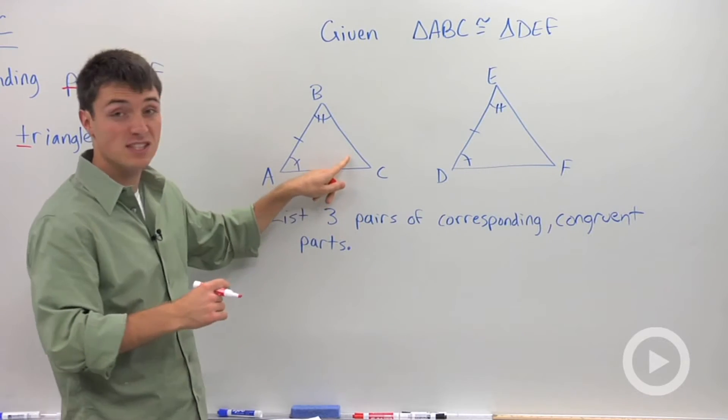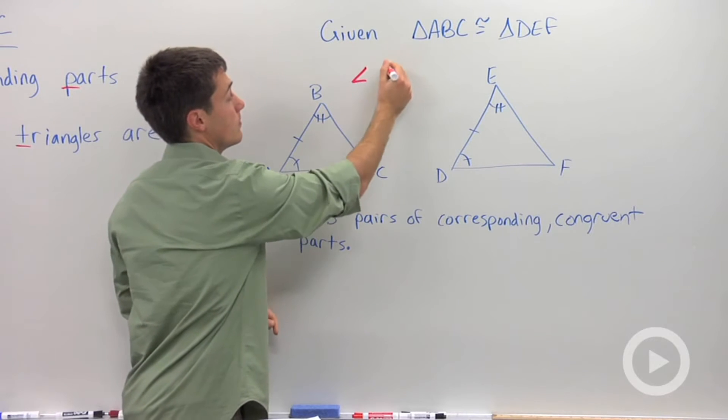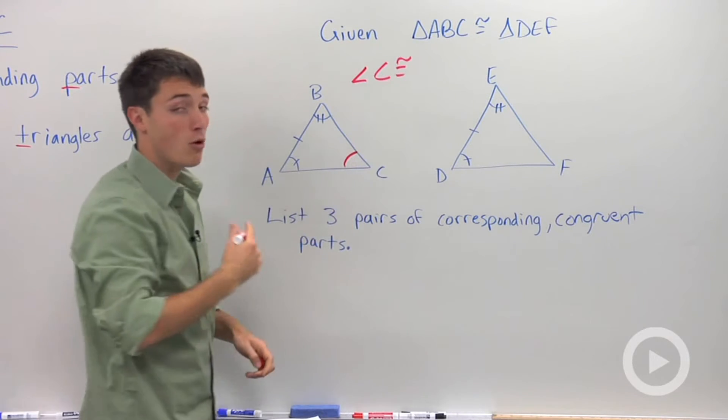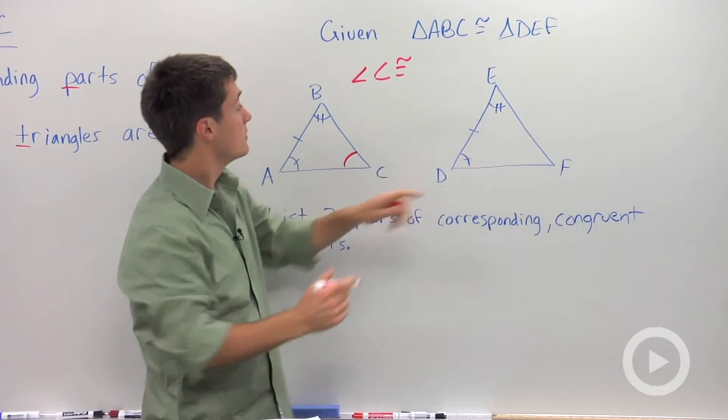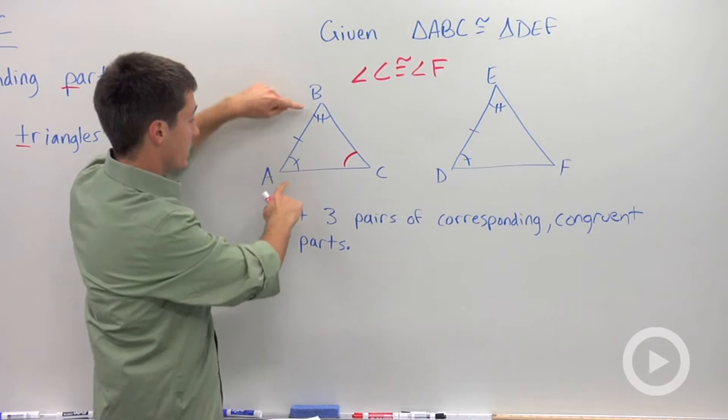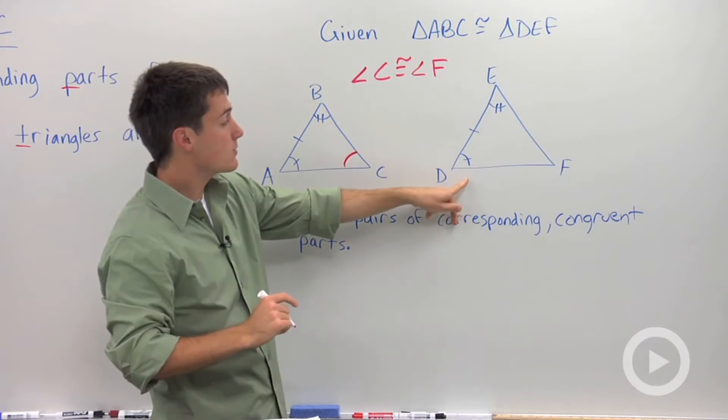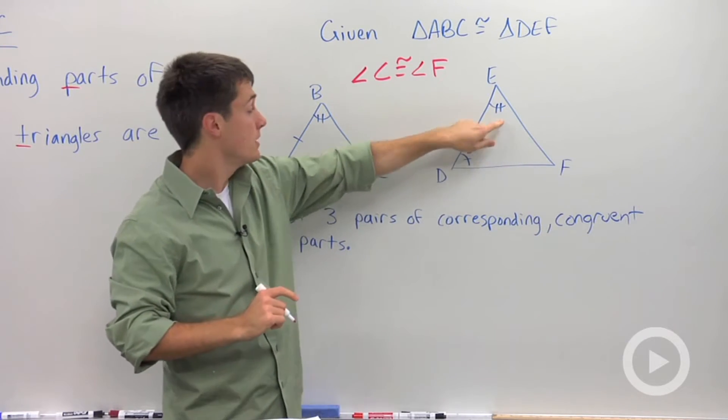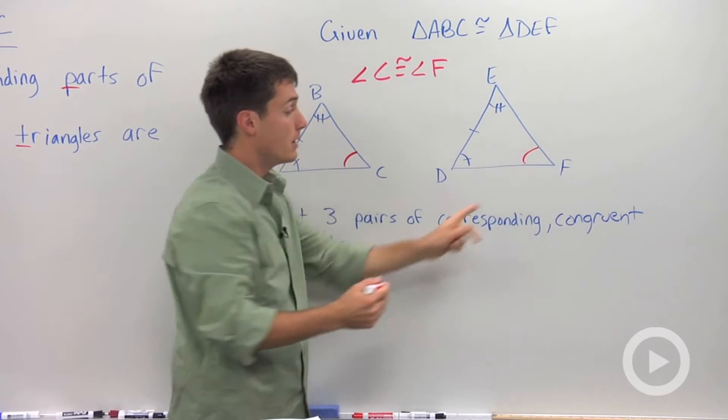So let's pick out angle C. If I look at angle C, the congruent corresponding part must be angle F. And how did I know that? Well, there's two ways. One, I could look at A and B and say A has one mark, B has two marks, D has one mark, E has two marks. So the only angle in this triangle that doesn't have a congruence mark is F.